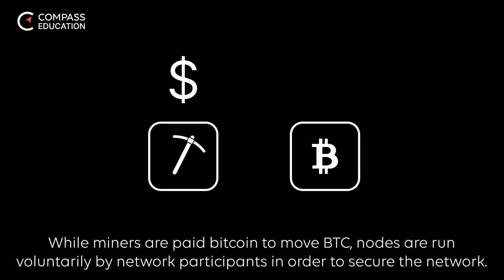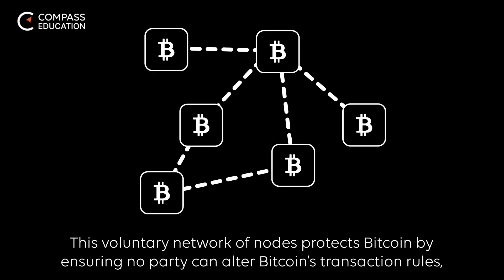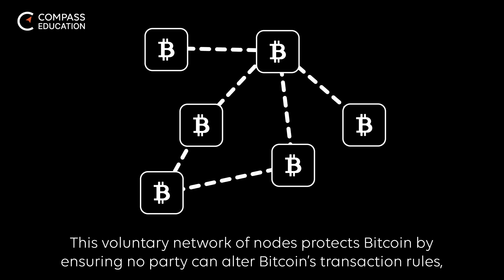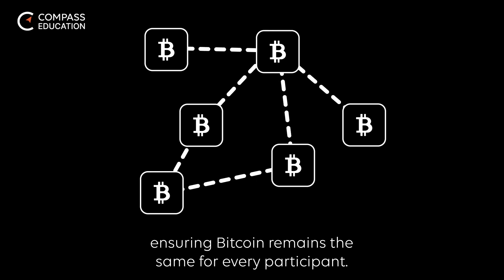While miners are paid Bitcoin to move BTC, nodes are run voluntarily by network participants in order to secure the network. This voluntary network of nodes protects Bitcoin by ensuring no party can alter Bitcoin's transaction rules, ensuring Bitcoin remains the same for every participant.